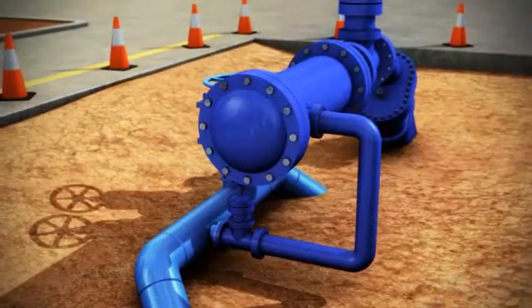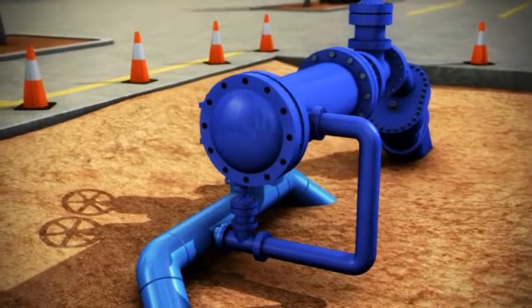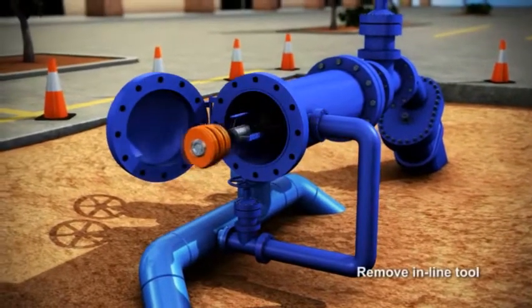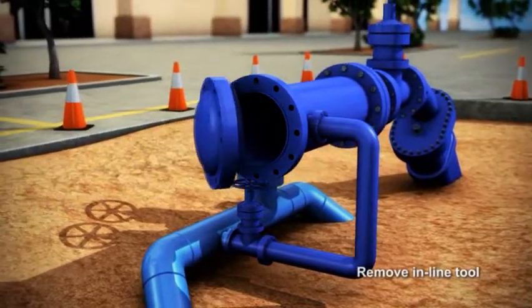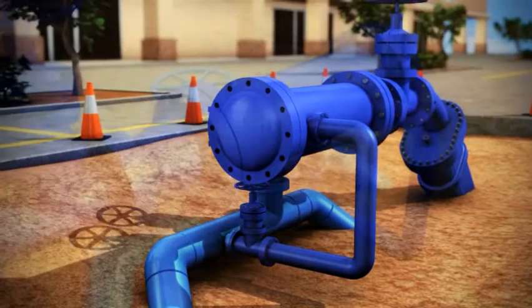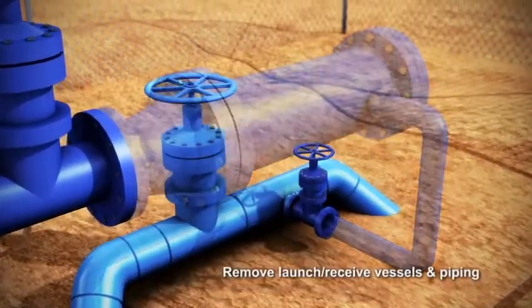Depressure the receive vessel and remove the inspection tool. Remove the launch and receive vessels and associated piping.